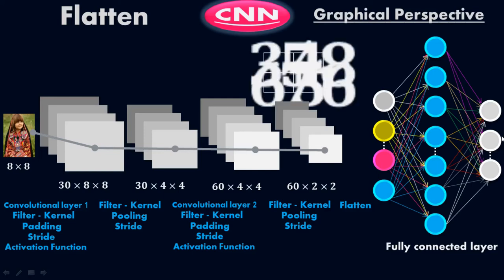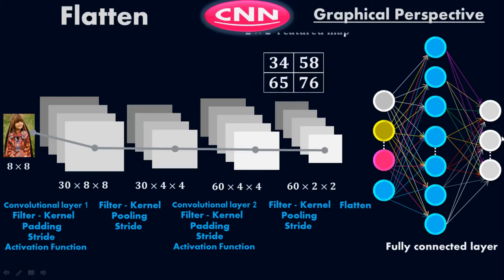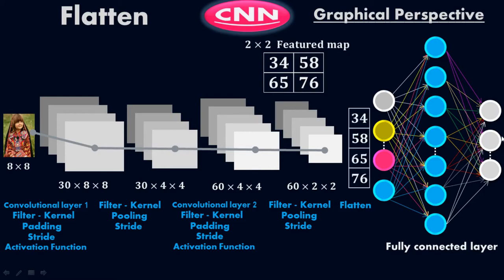For example, this is my two-dimensional area which is a 2 by 2 featured map. I'm going to make it one-dimensional. To do so, I will put all the pixels in a single column — just connect this to the flatten layer, and then flatten to the fully connected layer.